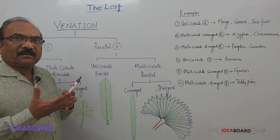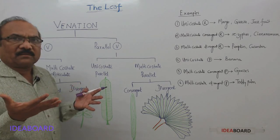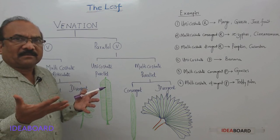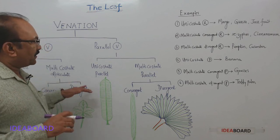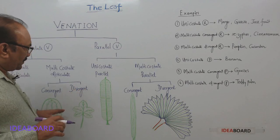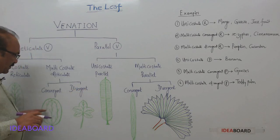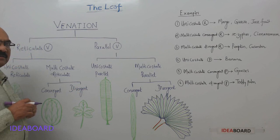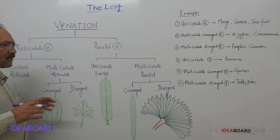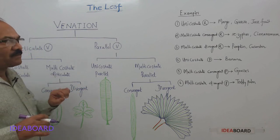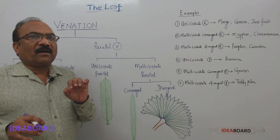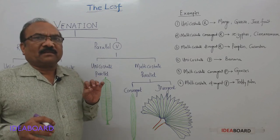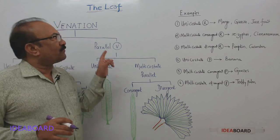but also help in giving strength to the lamina. Because of the presence of these veins and veinlets, the lamina spreads out or expands. You can see that this arrangement is not the same in all plants.